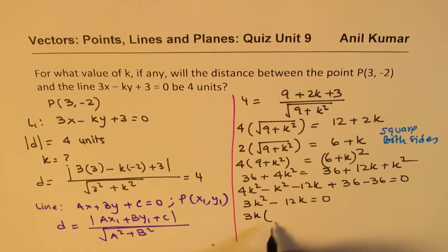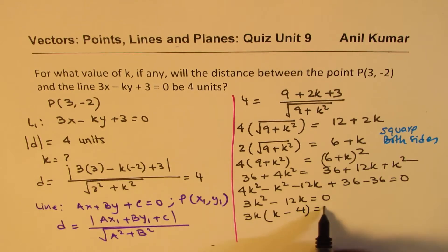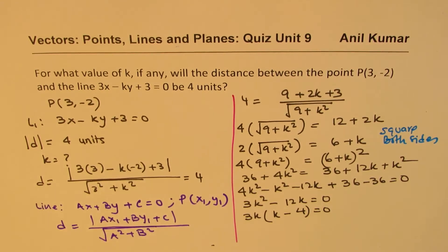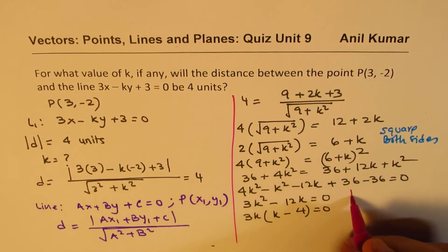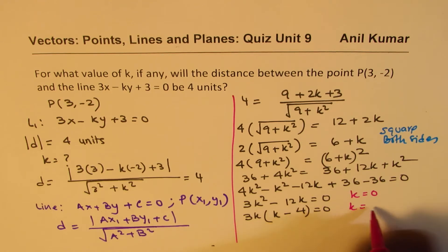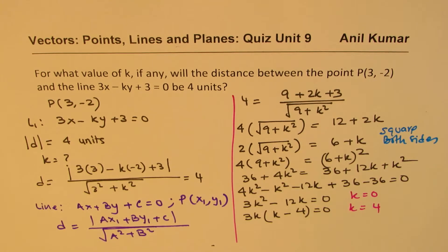Now 3k is common, and so we get k(k - 4) = 0. So that gives us two values of k, so one is k = 0, the other one is k = 4.